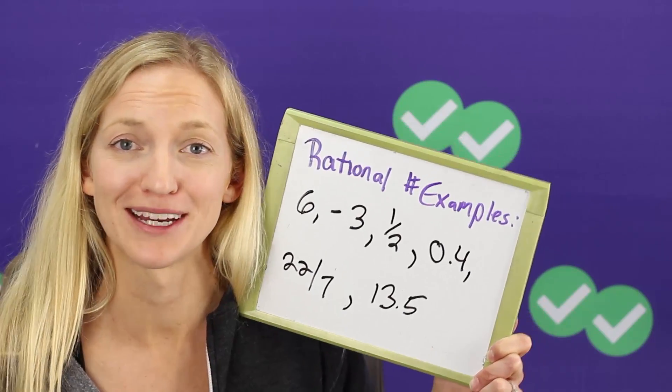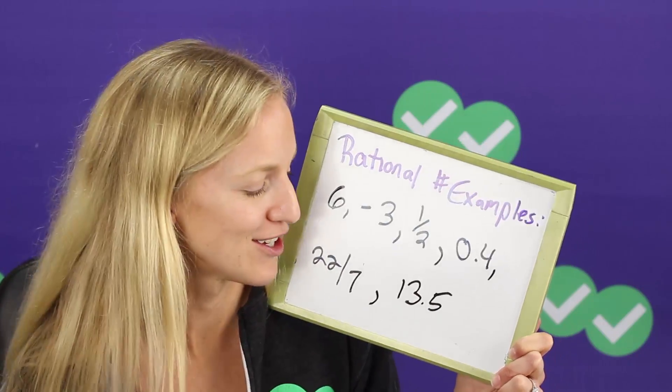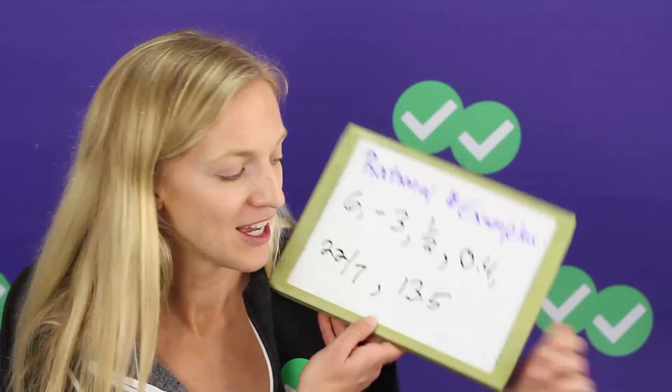13.5, that is a decimal that can be expressed as a fraction as well. We can convert that. Here are some irrational number examples.